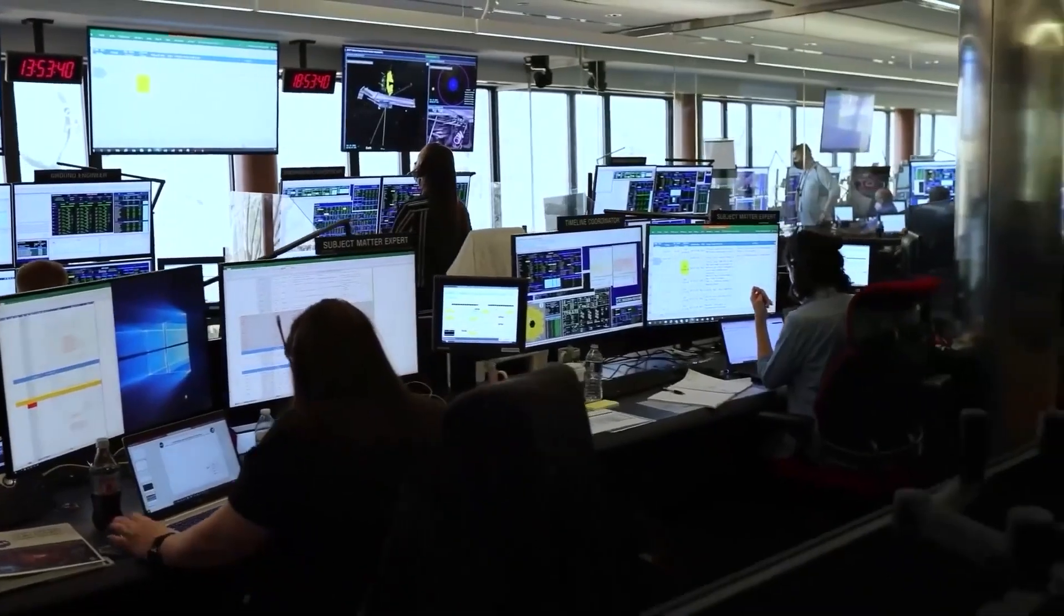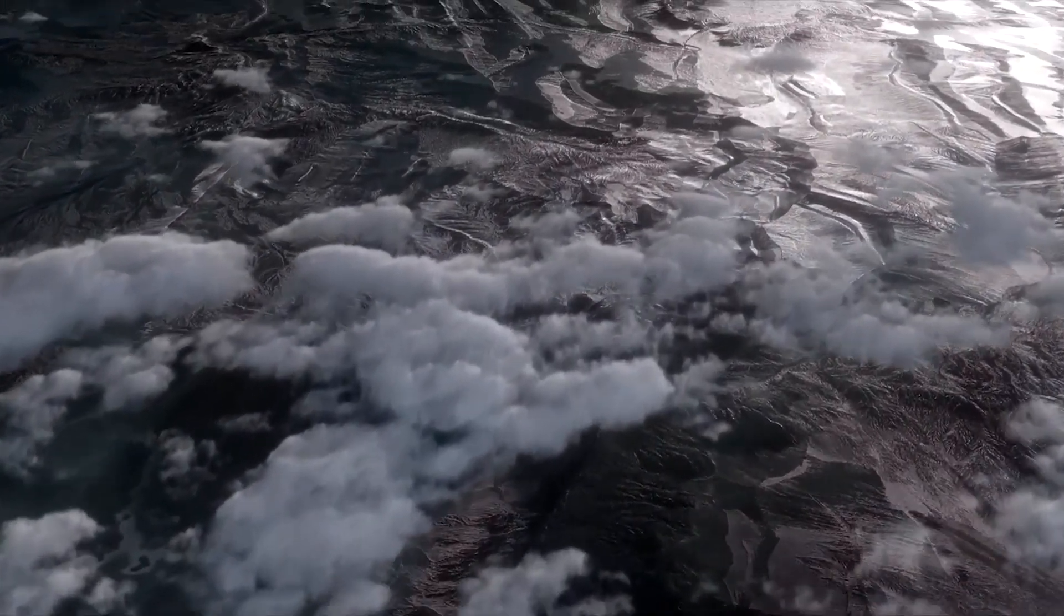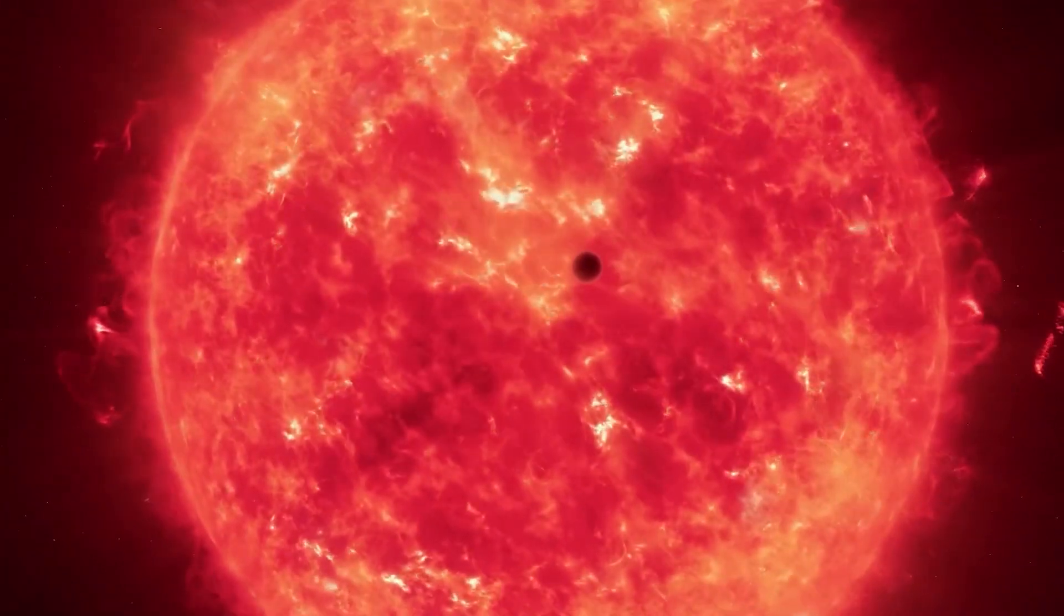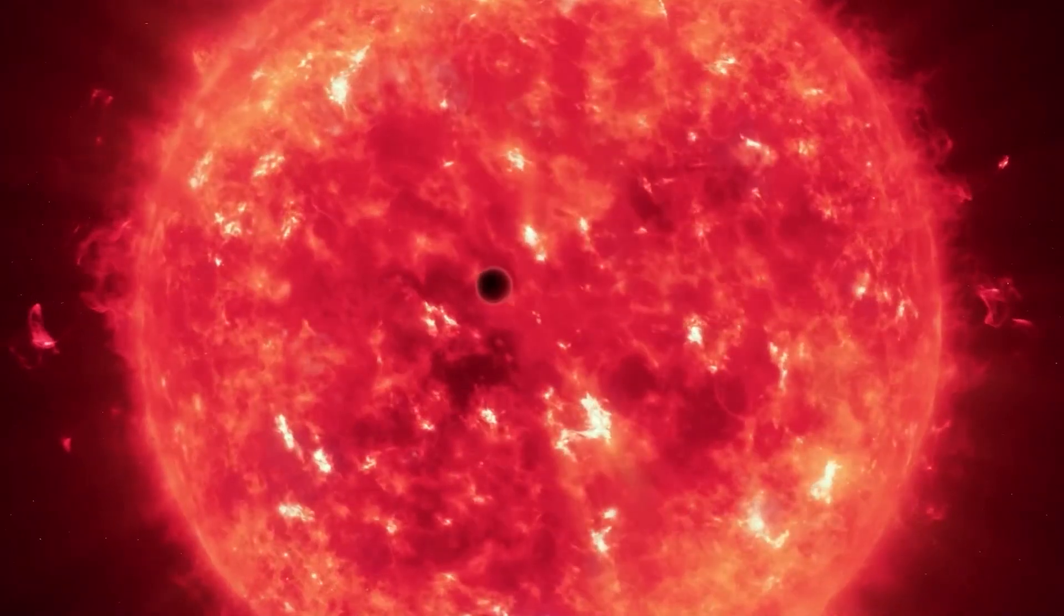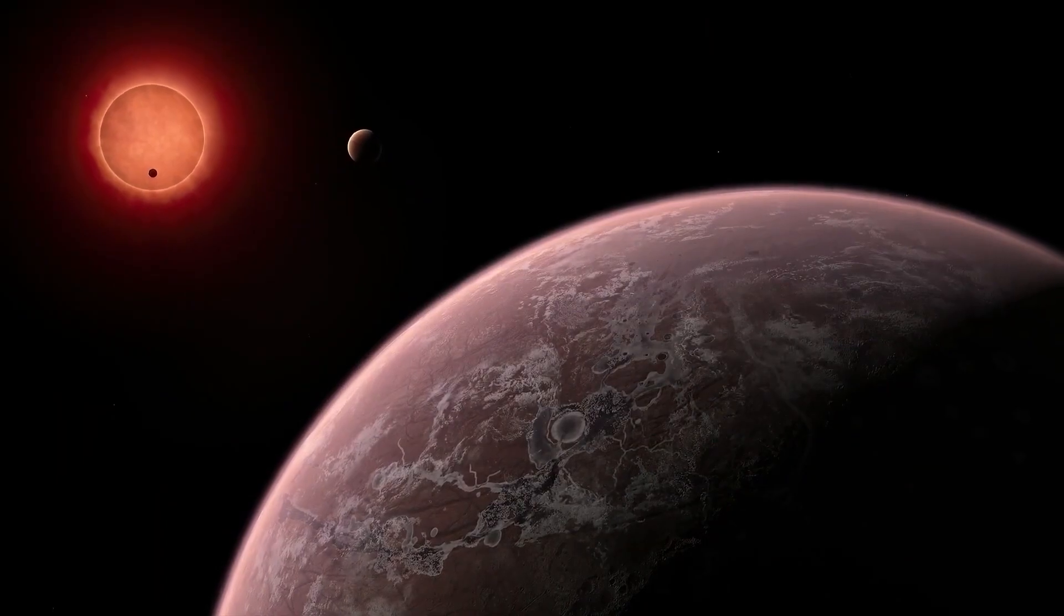According to the researchers, if there isn't enough rocky material in the disk to form the initial core, or if the disk evaporates away before the massive core is created, then one cannot form a gas giant planet. And yet, TOI-5205b formed despite these guardrails.